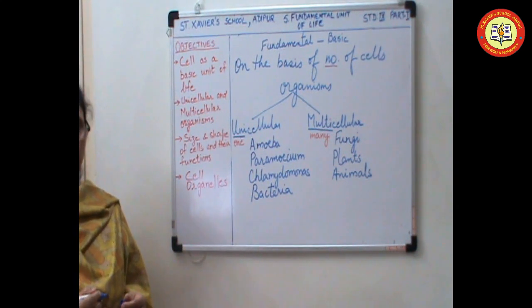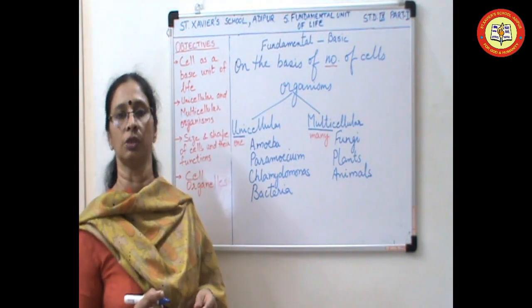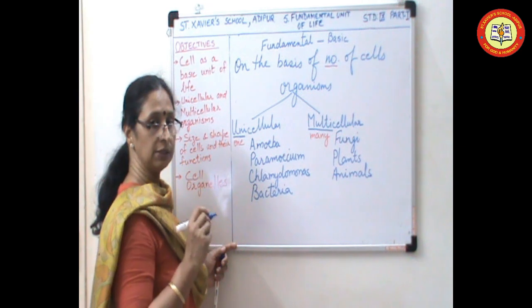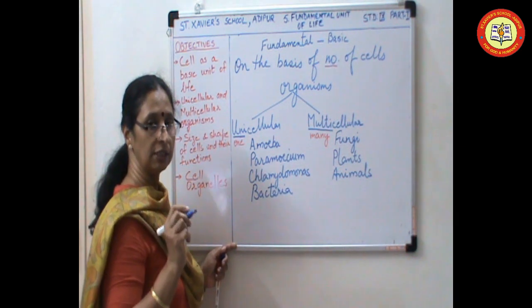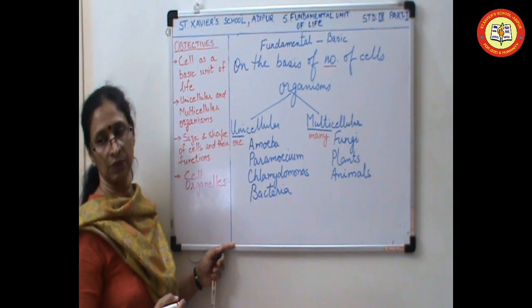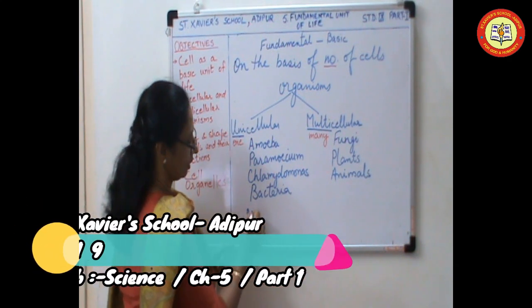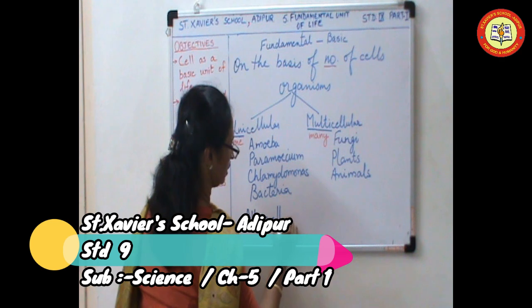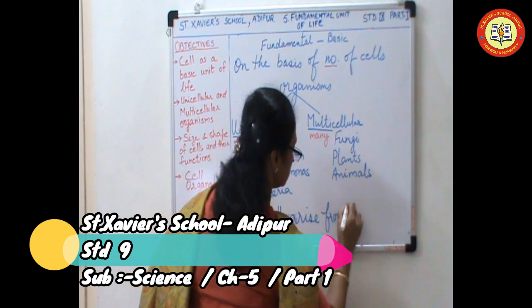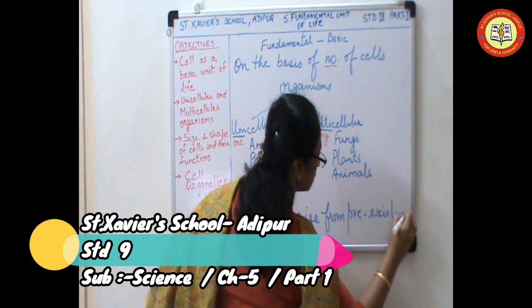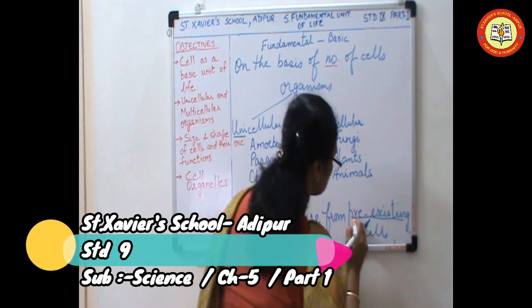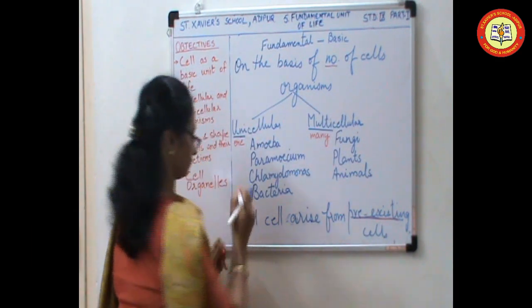The two botanists, Schleiden and Schwann in 1839 proposed a cell theory. And that stated, plants and animals are composed of cells and cell is the basic unit of life. Rudolf Virchow in 1857 expanded this theory and stated, all cells arise from pre-existing cells. A very important point.